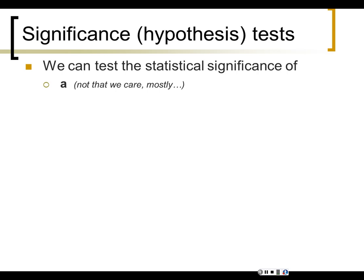The alternative hypothesis for a would be that it's not equal to zero in the population, but we don't usually care about that — it rarely makes sense whether the y-intercept is zero or not. However, we do care about b, because b and r are the same thing. B is just r in disguise — r is standardized b, b is r with its Clark Kent suit and glasses on. So if you test the significance of b you are also just testing the significance of r; the p-value will be the same.